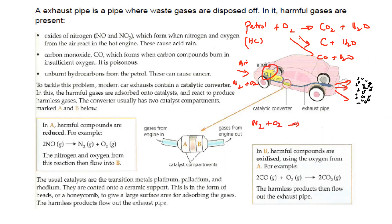As a result of nitrogen and oxygen reacting at high temperature, they form oxides of nitrogen such as nitrogen monoxide or nitrogen dioxide. Because these are acidic oxides, they can cause acid rain.